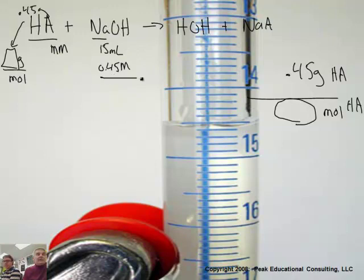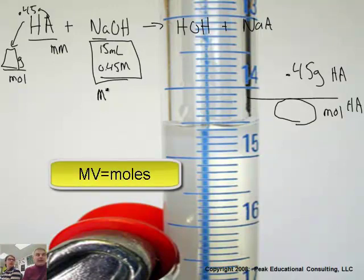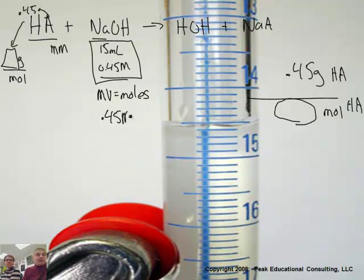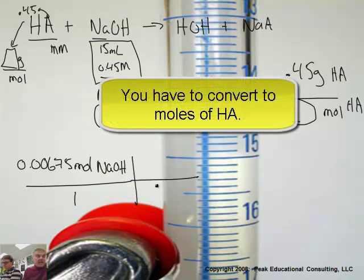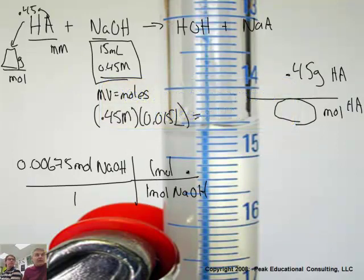So I have a molarity and a volume. Oh. Yeah. M times V equals moles. So if you multiply these together, 0.45 molar times 0.015 liters. Notice I'm playing the leader game. What do I get? 0.00675. And that's moles of NaOH. Right. I don't want moles of NaOH. Nope. I want moles of HA.